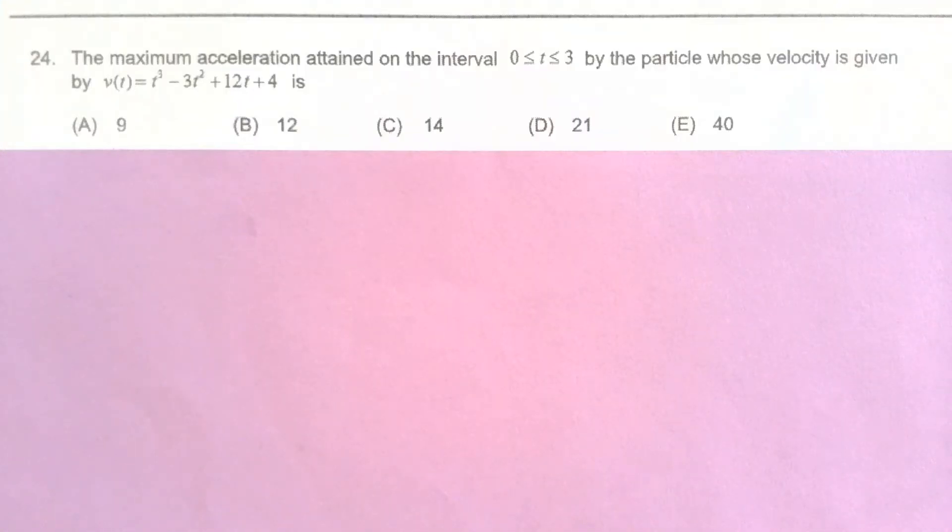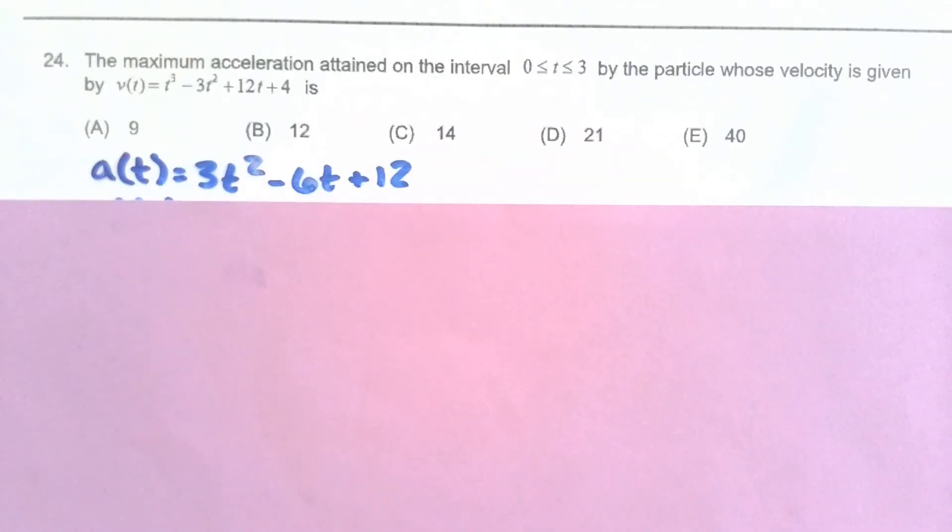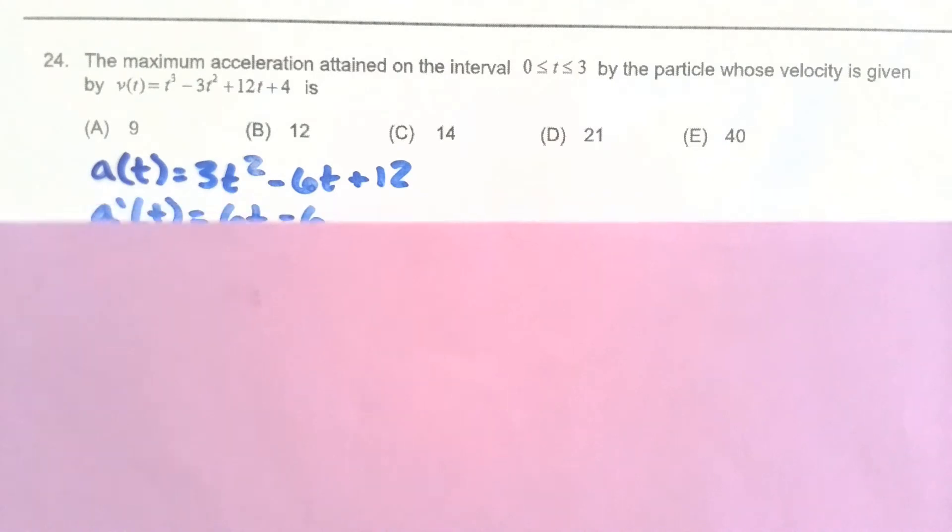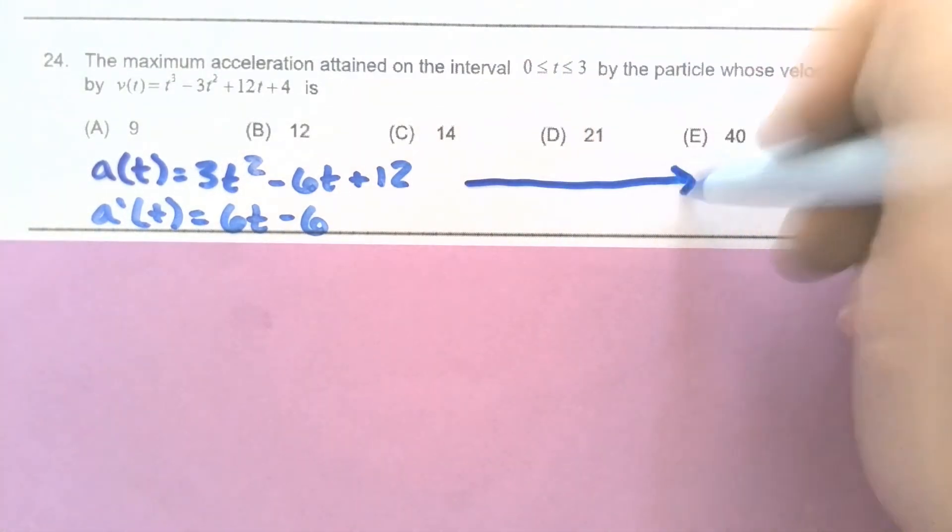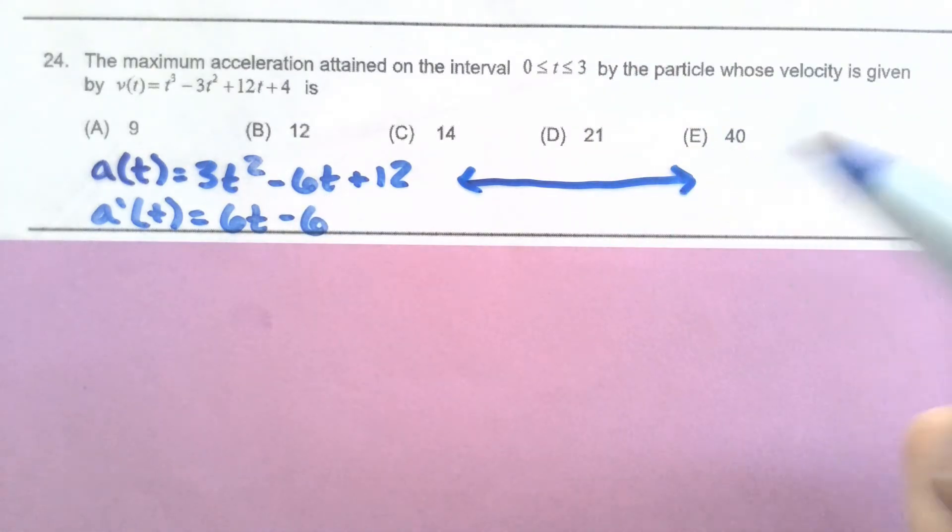For our first example, we're looking for the max acceleration that's attained on this interval 0 to 3 when we're given the velocity of a particle. So remember, when we're looking for a max, that means that we have to take the derivative of whatever we're talking about to look for where it goes from positive to negative, because that means what we're talking about is going from increasing to decreasing. So since we're talking acceleration, I have to not only find the derivative of velocity to find acceleration, but I want to take the derivative one more time so that I'm looking at the derivative of acceleration. So this is going to tell me wherever a prime goes from positive to negative, that's where my acceleration has a max, a relative max.